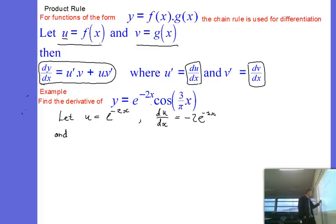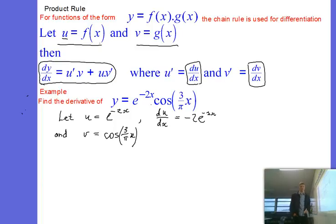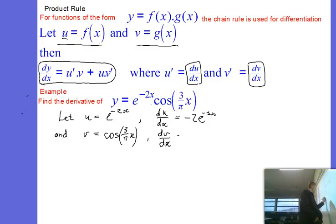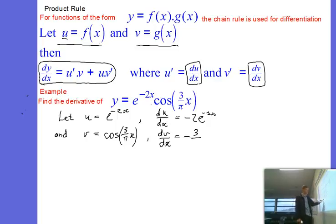Now what else do we have? We've got our v function. v is equal to cos of 3 on pi x. Let's work out the derivative of that function. The derivative of cos is what? It becomes the minus sine function with that k value — the value multiplying the x — coming out the front.